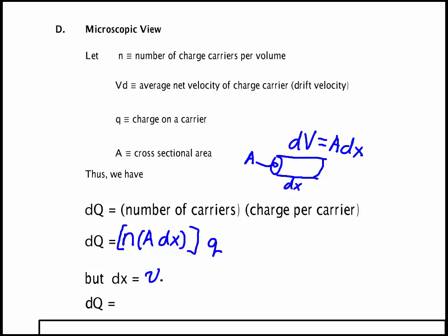But dx is simply the drift velocity times delta t. So if I put that in, I now have n A Vd dt times q. But that means if I divide both sides by dt, dq/dt is equal to n times A times q times the drift velocity. That's the number of carriers per volume times the cross sectional area times the charge on a carrier times the drift velocity. But the derivative of charge with respect to time is the current. So I've now got a relation between the current and two well defined characteristics: this drift velocity and this charge per carrier.